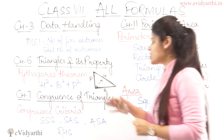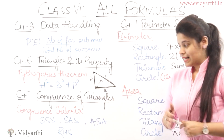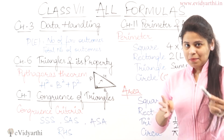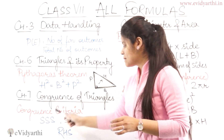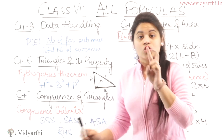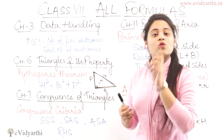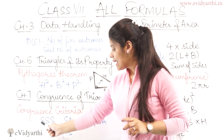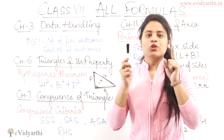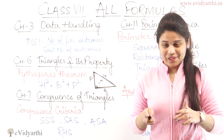Then we have chapter 7, which is congruency of triangles. Here you have four congruency criteria. The first is SSS — side, side, side. If you have three sides equal, then the two triangles are congruent.